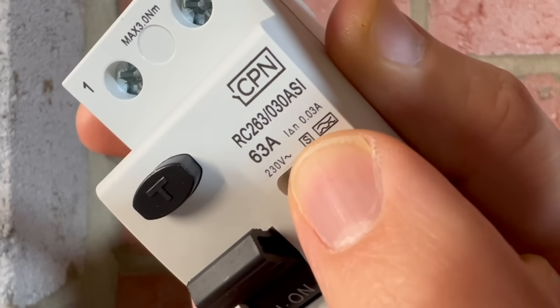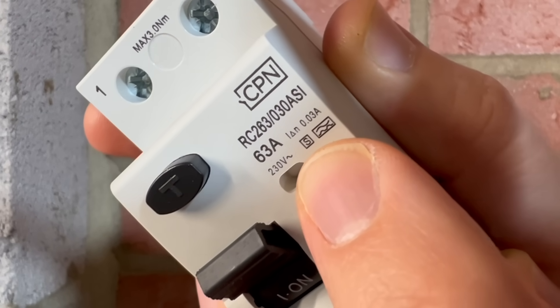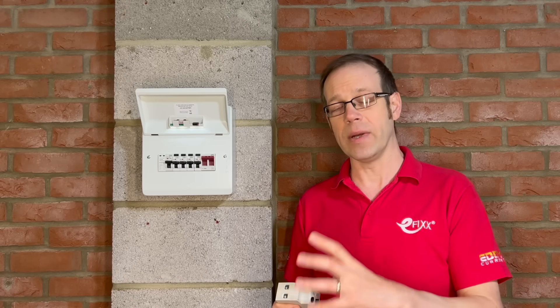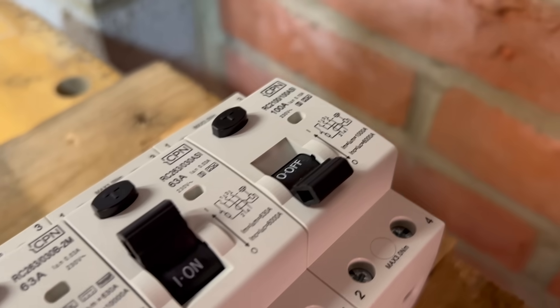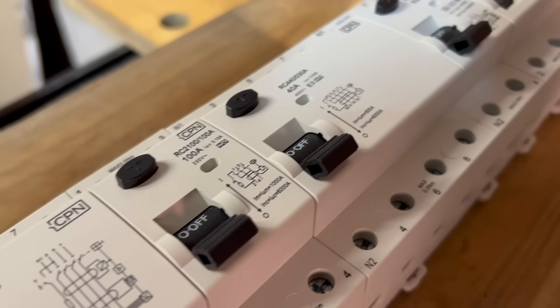There are other types of time delayed RCD such as the APR but in the context of this situation the type S is generally the best option. In fact the S actually stands for selectivity and should be printed on the device as you can see here. The type S RCD has a function added to it that introduces a time delay when it detects a fault. So any of the other types of RCD - AC, A, F, B and so on - can also be type S.